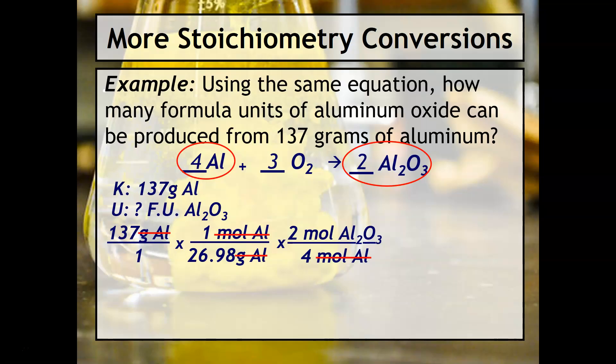The last step is, since the question is asking specifically about formula units, we do need to incorporate the six point oh two times 10 to the twenty-third number. And then moles and moles will divide out. Don't forget to use that EE or EXP button on your calculator to plug in scientific notation. And so your answer should be 1.53 times 10 to the 24th formula units of aluminum oxide.